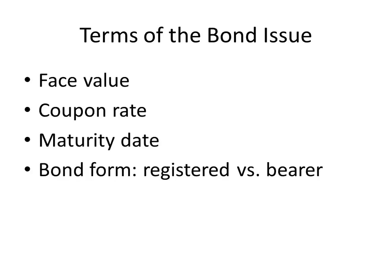Let's talk about the terms of the bond issue. These include the face value of the bond, which is usually $1,000; the coupon rate; the maturity date — that is, the date on which the final coupon will be paid as well as the face value; and then the form of the bond.